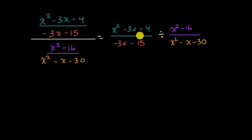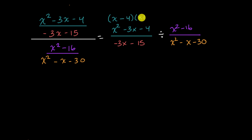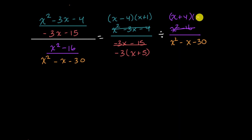Now we can factor the various numerators and denominators and think about which x values could get us into trouble. x squared minus 3x minus 4: negative 4 times positive 1 is negative 4, and they add up to negative 3, so that factors as x minus 4 times x plus 1. The denominator negative 3x minus 15 factors as negative 3 times x plus 5. Then x squared minus 16 is a difference of squares, giving us x plus 4 times x minus 4. And x squared minus x minus 30: negative 6 plus 5 is negative 1, negative 6 times 5 is negative 30, so that's x minus 6 times x plus 5.